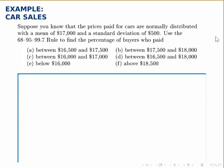Suppose you know that the prices paid for cars are normally distributed with a mean of $17,000 and a standard deviation of $500. We want to use the 68-95-99.7 rule, or the empirical rule, to find the percentage of buyers who paid in any given range.